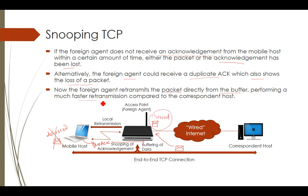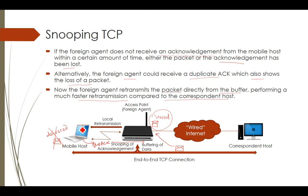This performs a much faster retransmission compared to waiting for the correspondent host. If a duplicate acknowledgement is generated by the mobile host, it takes a long time to reach the correspondent host. Without waiting for that, the foreign agent resends the data from the stored buffer to the mobile host immediately. That is why local retransmission is the easiest and fastest way to serve the mobile host.